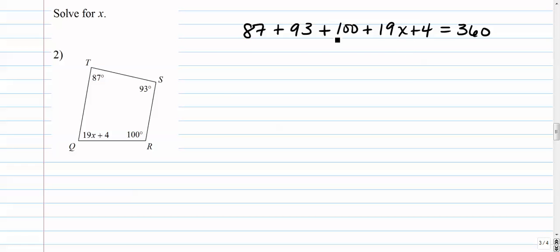And we just want to combine all the constants together. So I've got 87 and 93. That's going to be 180, plus 100 is 280, plus 4 is 284. So I've got plus 19x equals 360. I want to get rid of the 284, so we're going to move that to the other side by doing its inverse operation. Here we get them to cancel. Over here, we get 360 minus 284. 360 minus 284 is 76.